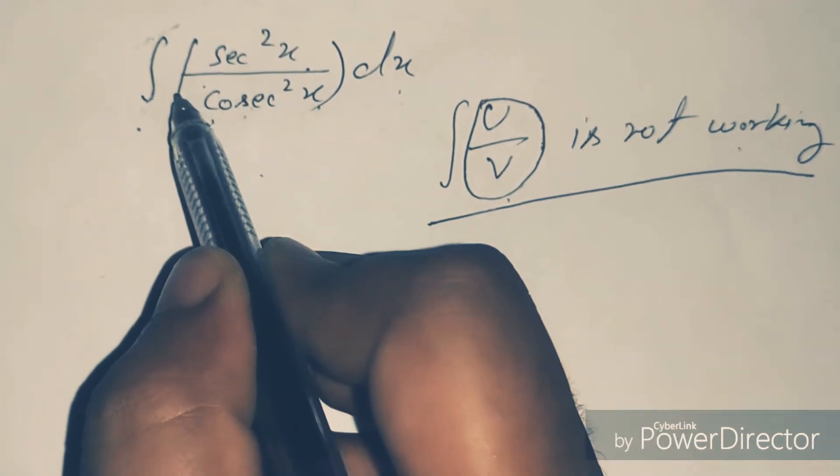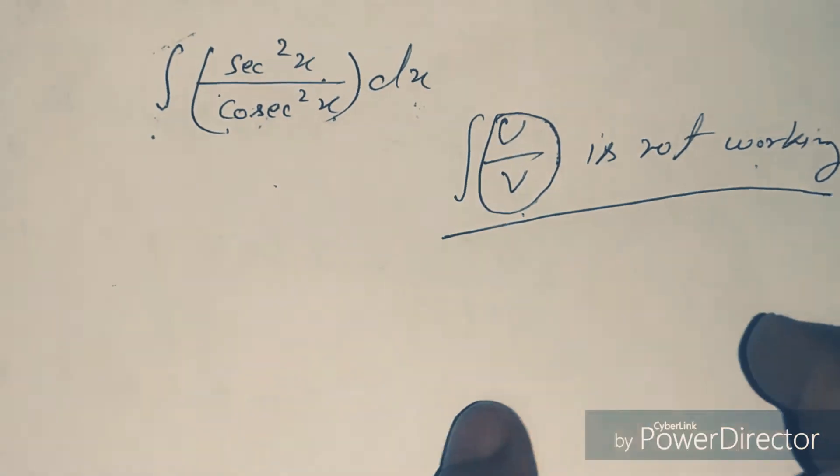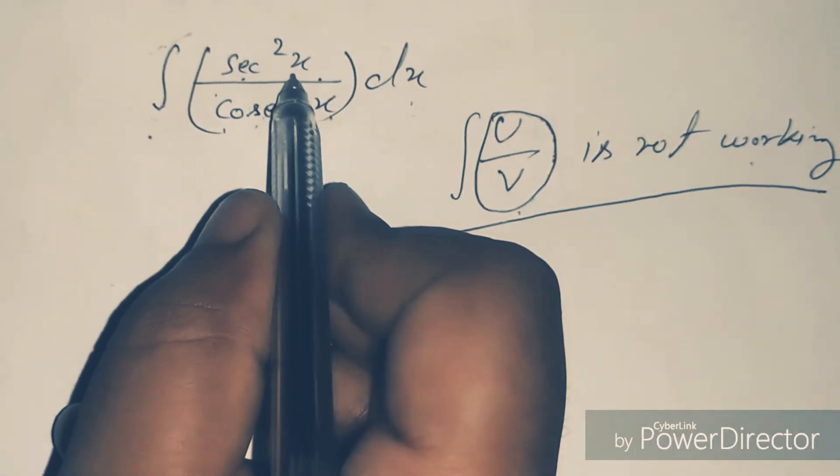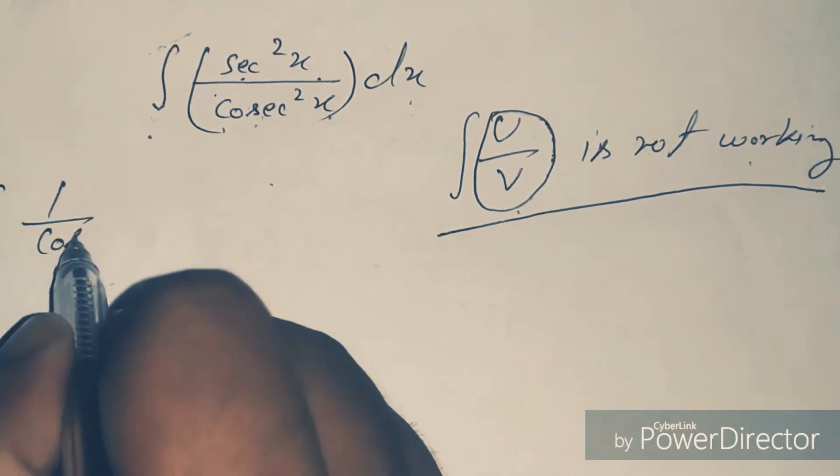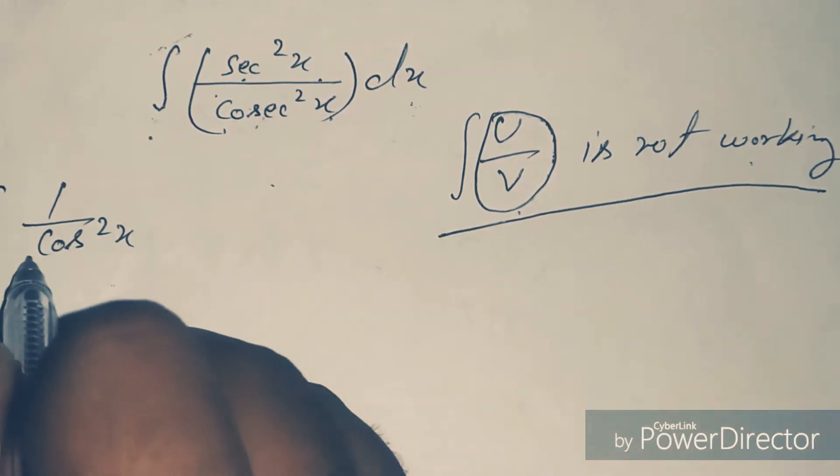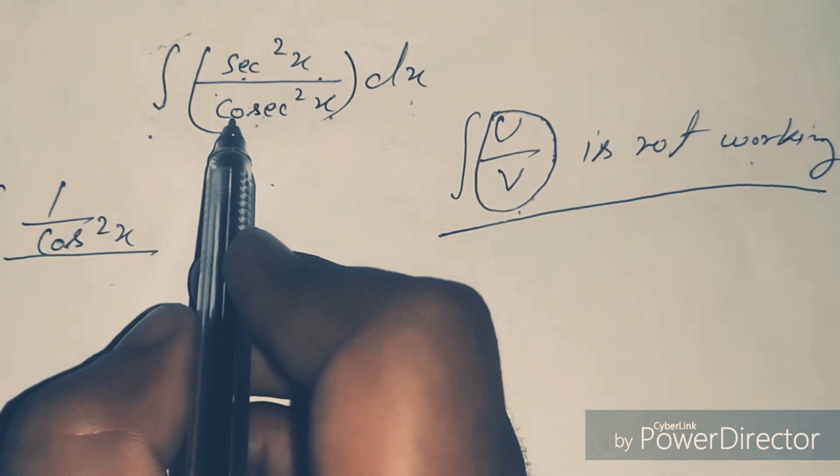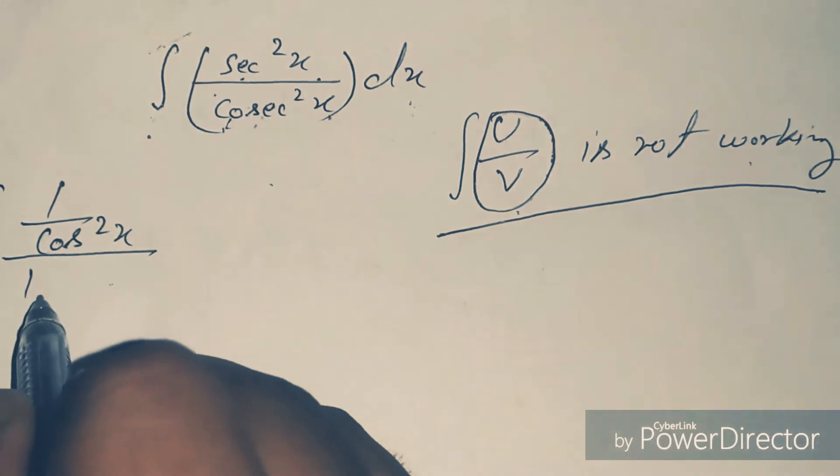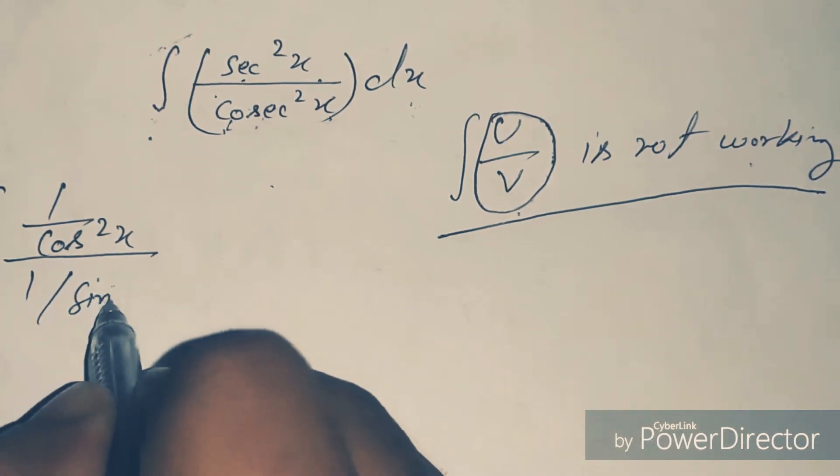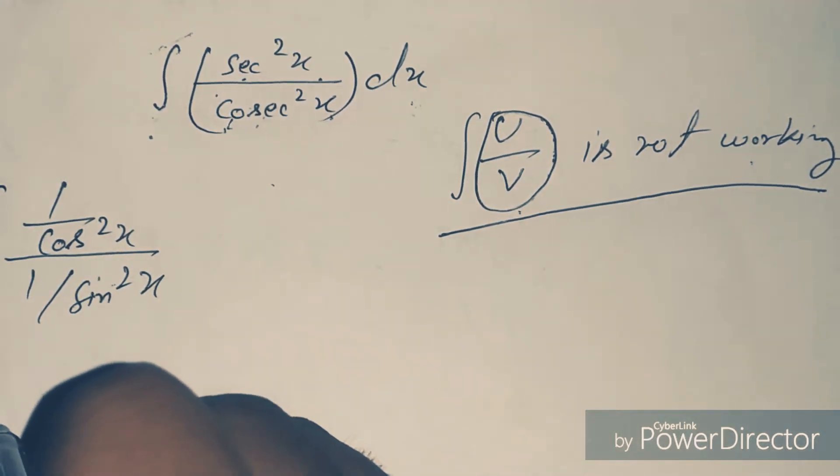Then we remove the denominator function. Sec²x I change it into 1/cos²x, and cosecant²x is also equal to 1/sin²x, right?